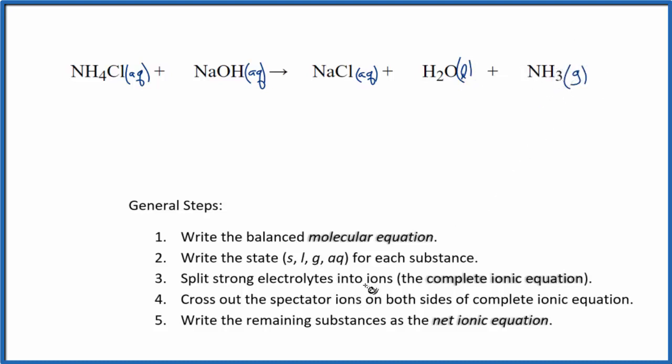So we have our states. Now we can split the strong electrolytes into their ions, and this will give us the complete ionic equation. We can look on a table of common ions and look up NH4 and know that has a 1+ charge. On the periodic table, chlorine has a 1- charge.